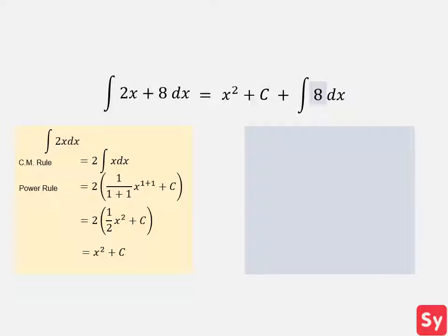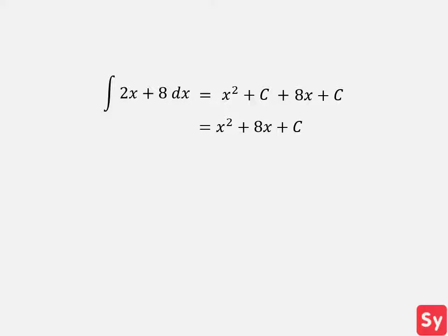Next we'll take the second integral, the integral of 8 with respect to x. We'll use the constant rule to solve this integral. We multiply x to 8 and add c. Now we'll replace the integral of 8 with 8x plus c. We can now simplify the solution to x squared plus 8x plus c because a constant plus a constant is still a constant.